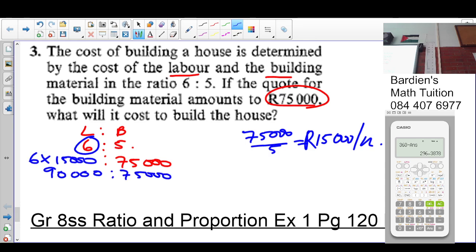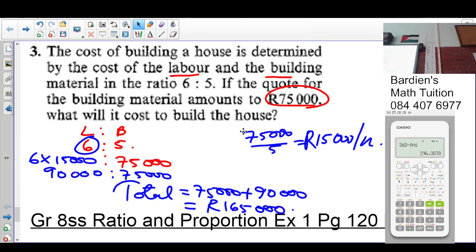What are you looking for? The total cost. I am going to give you 75,000 plus 90,000. Do you have an answer? 165,000. Okay. Is there anybody that is confused?